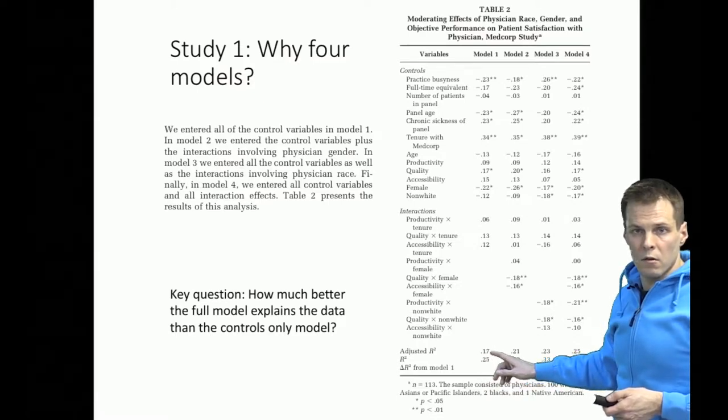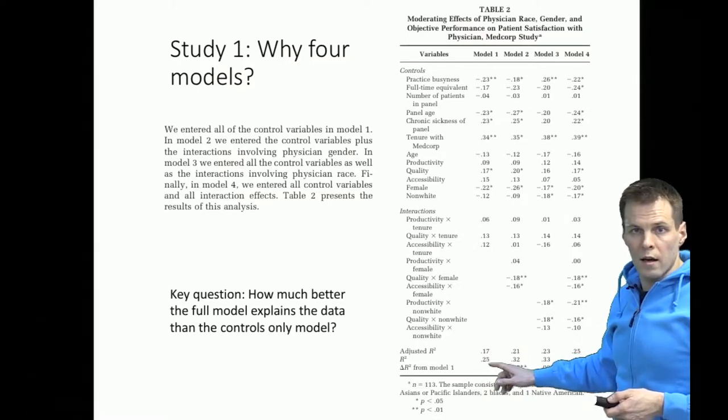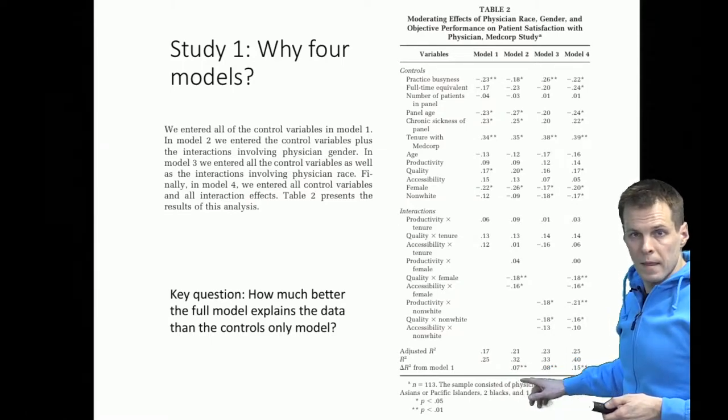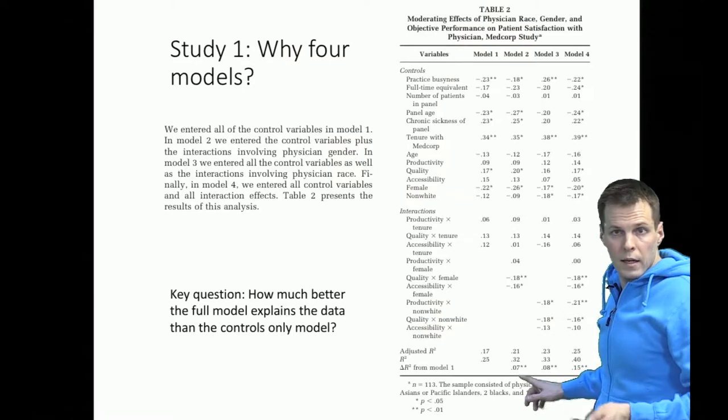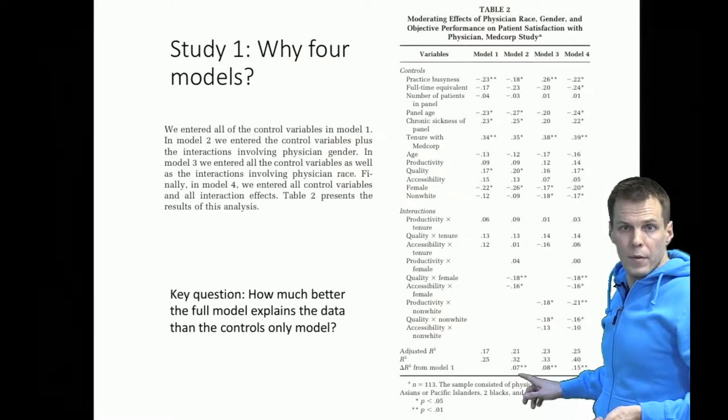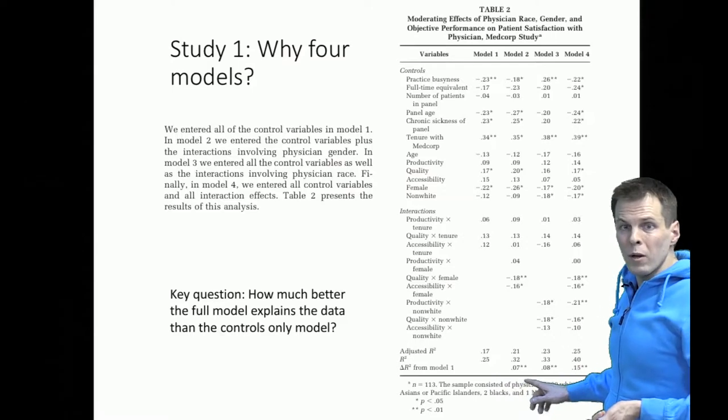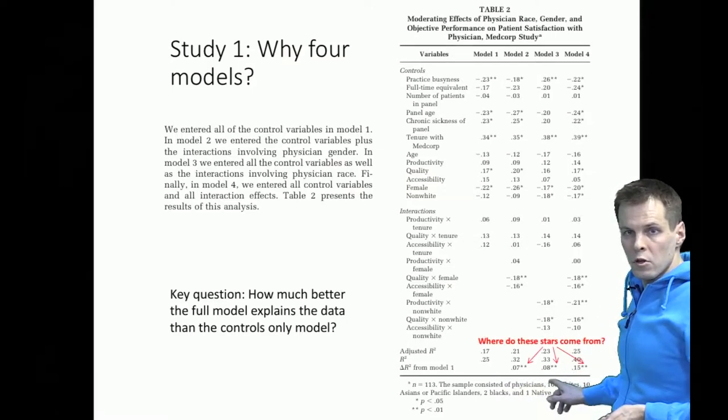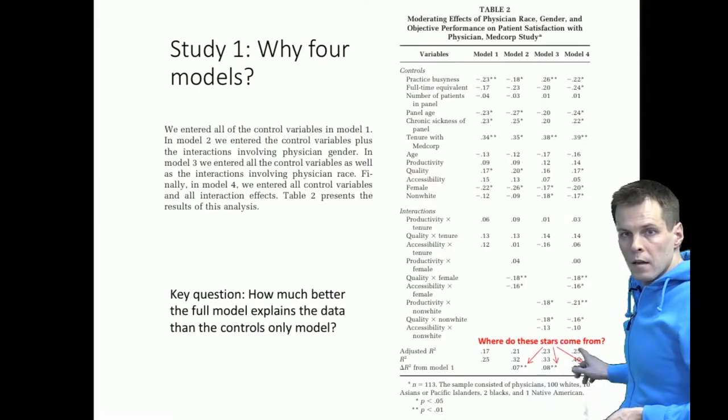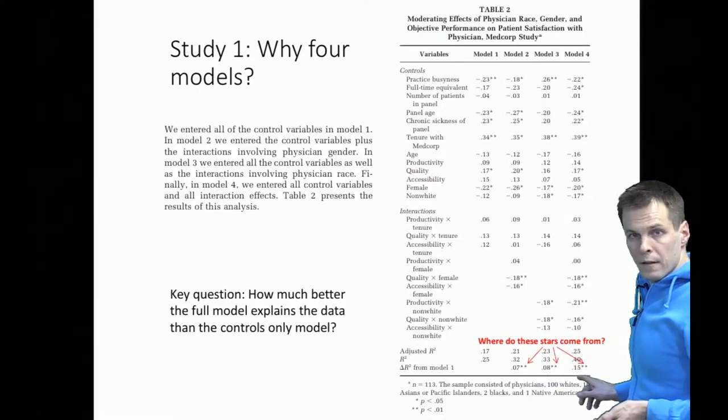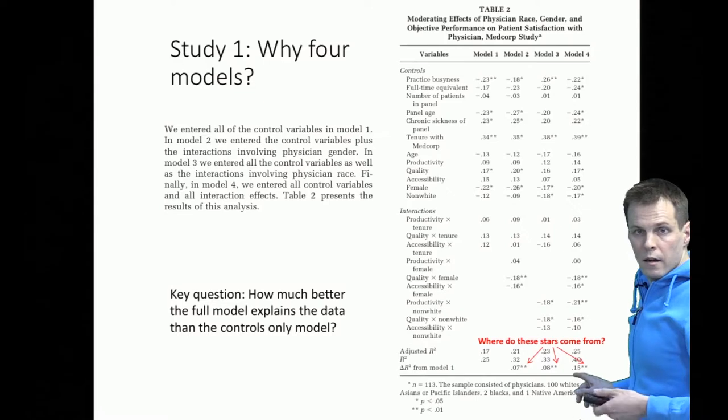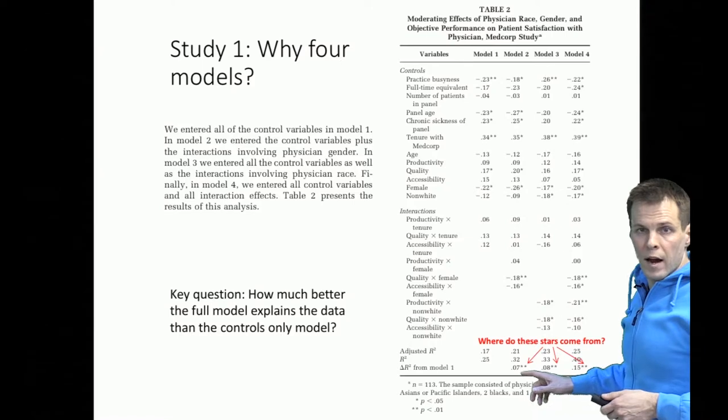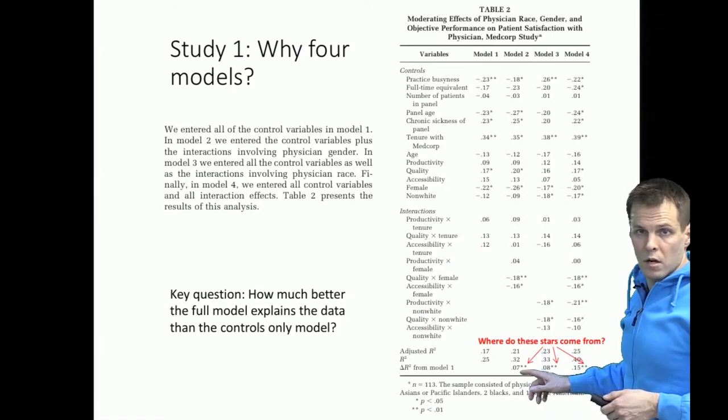The adjusted R-square difference is 4, the actual R-square difference is 7 or 0.07, 7%. So the interesting variables explain the data a bit more than the control variables only. Now we will be focusing on these test statistics here. So where do these stars come from? These stars come from an F-test that tests the null hypothesis that all the regression coefficients for every variable added to this model are zero.